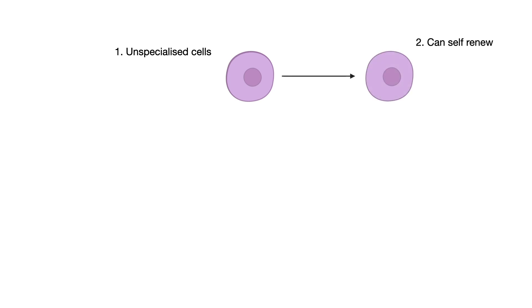The second property is their ability to renew. Stem cells can proliferate and give rise to more undifferentiated cells without losing their ability to divide or reaching senescence.